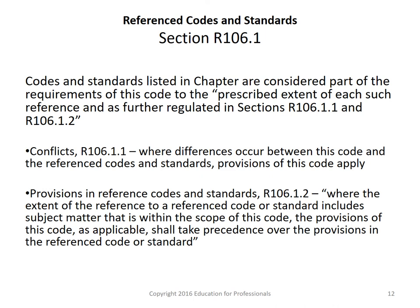The codes and standards listed in the chapter are considered part of the requirements of the code as further regulated in sections 106.1.1 and 106.2. Where differences occur between this code and the reference codes and standards, the provisions of this code apply. Likewise, where referenced standards include subject matter within the scope of this code, the provisions of this code shall take precedence — creating a somewhat circular set of statements.